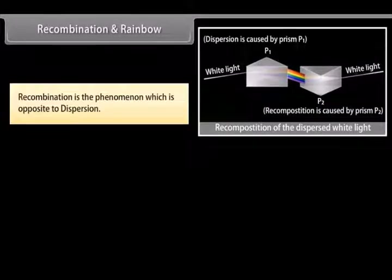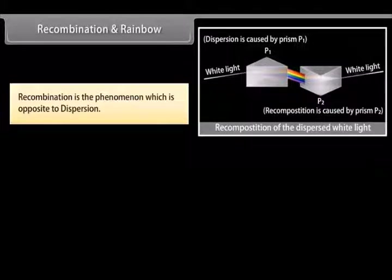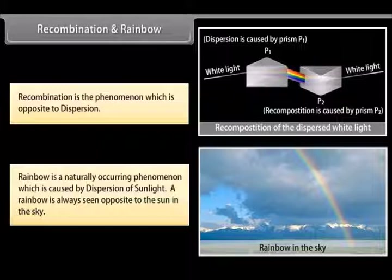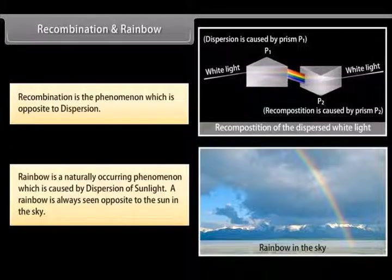Recombination and rainbow: Isaac Newton observed that if two glass prisms are placed parallel to each other with one inverted with respect to the other, white light entering one prism gets split into seven colors which, when they fall on the other prism, recombine to give white light again — this is termed recombination. A rainbow is a natural phenomenon that occurs as a result of dispersion. It is always seen opposite to the sun in the sky. During rain, water drops act as prisms, refracting, dispersing, and internally reflecting sunlight to give the rainbow.